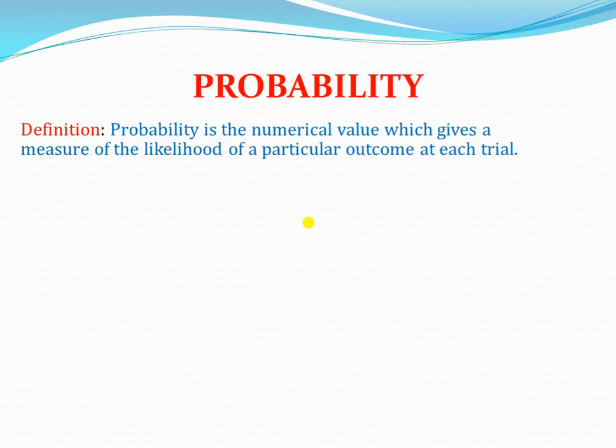Now let's look at how to define probability, especially at ordinary level. By definition, probability is the numerical value which gives a measure of the likelihood of a particular outcome at each trial. That is how we can define probability.